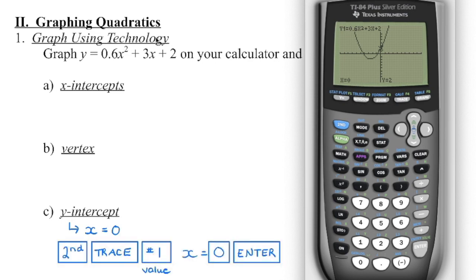So these are the keystrokes we can use: second function, trace, number 1 lets us put any value in for x. Knowing that the y-intercept will always have an x-coordinate of 0, we can get it that way.